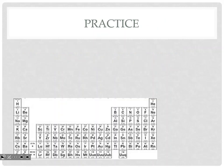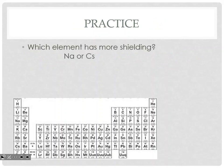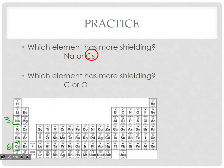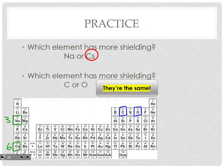Let's look at some practice. Which element has more shielding — sodium versus cesium? Cesium, because sodium's in row three and cesium's in row six. Cesium has six main energy levels, therefore it's going to be a much greater shielding effect. How about carbon or oxygen? They are in the same period, so the shielding stays the same. They're in the same period, so they have the same amount of shielding.